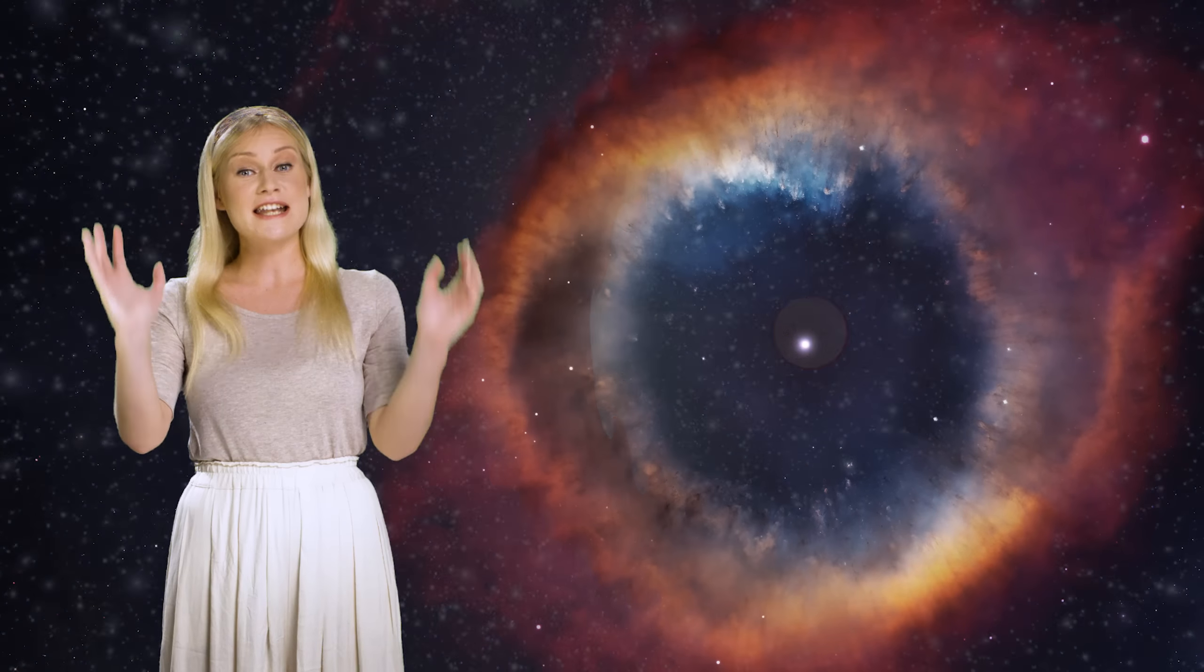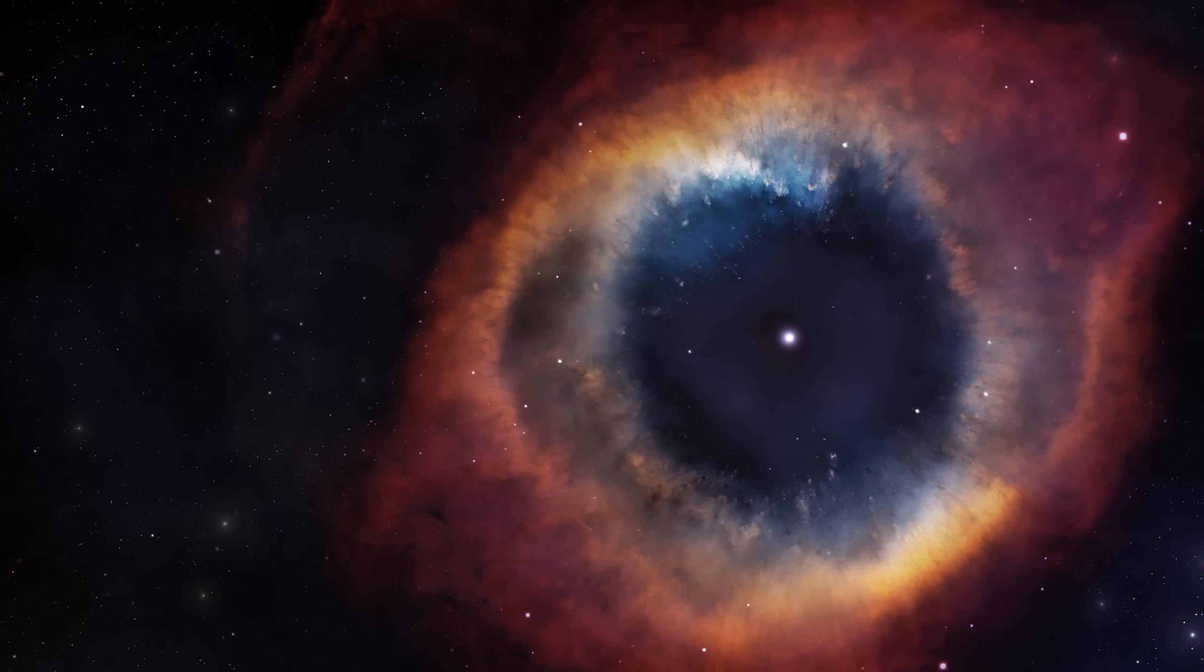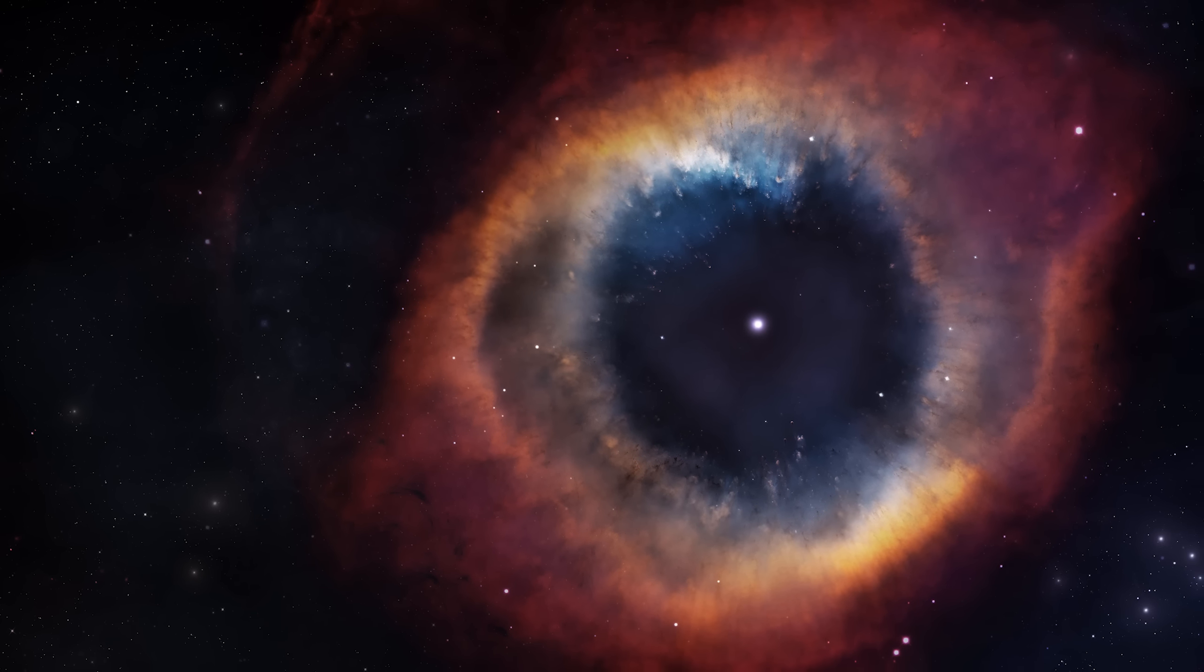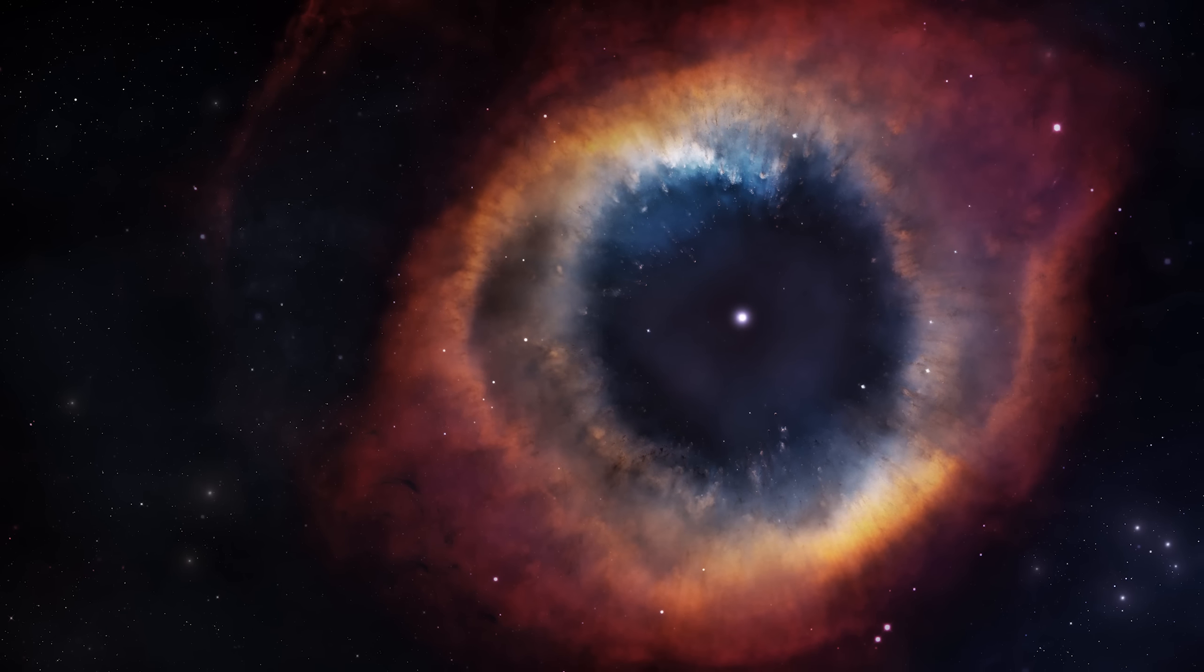When its core eventually runs out of helium, it'll start collapsing to a white dwarf, while the outer layers of the Sun will oscillate and be slowly expelled into what we call a planetary nebula. This means the Sun will eventually turn off and everything but the white dwarf will mix into space.